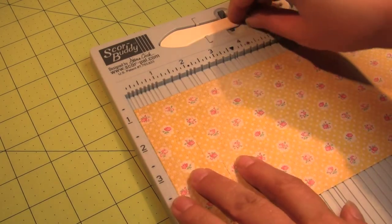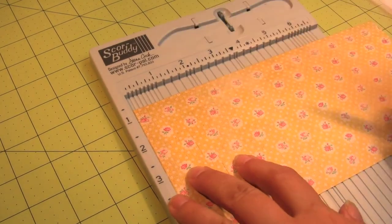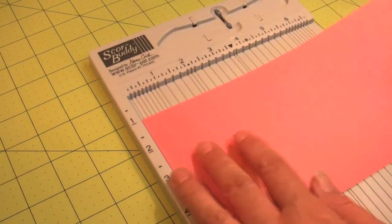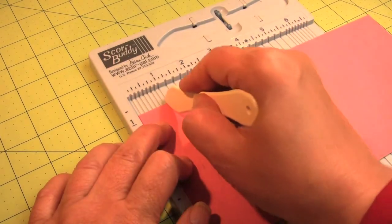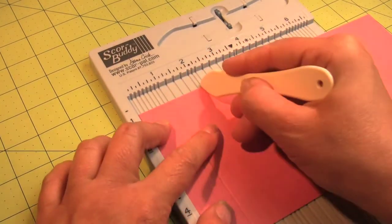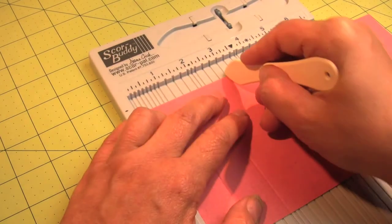First we're going to take our score buddy and our piece of paper. This is from the Basic Gray Mint Julep line, and I'm going to score at an inch each along this whole 9-inch panel. It's 9 inches by 4 1/2 inches. All the measurements will be on my blog too.